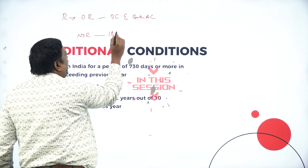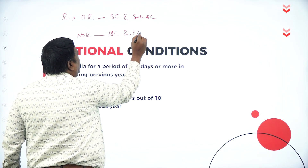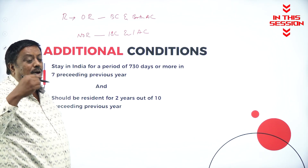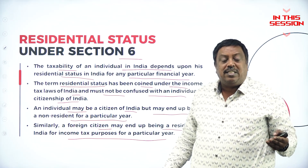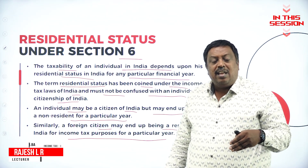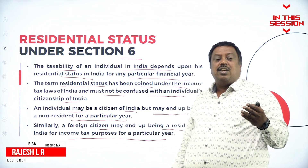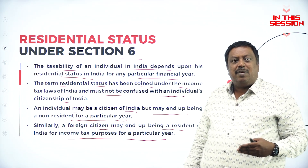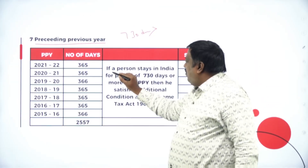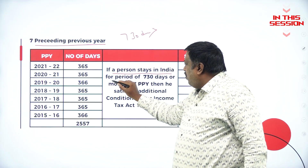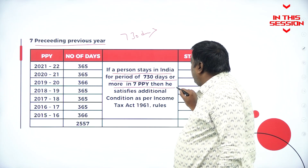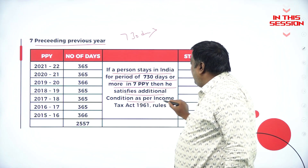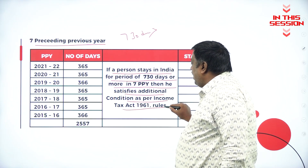When I satisfy one of the basic condition and one additional condition, then they're going to call me a resident not ordinary resident. During previous year, staying in India and satisfying both the additional condition as well as the basic condition, my status may be resident ordinary resident. If a person stays in India for a period of 730 days or more in seven preceding previous years, then he satisfies the additional condition as per Income Tax Act 1961.